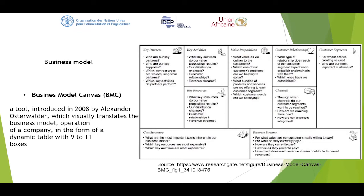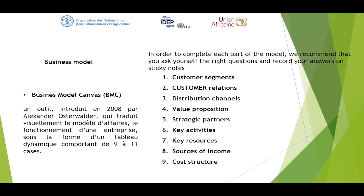Last but not least, the revenue streams. For what value are our customers really willing to pay — are they willing to pay at all? What are they paying for currently, and how are they currently paying? These are very important questions because if you're going to use digital, are they using mobile money or e-vouchers? How would they prefer to pay, and are they short of options? How much does each of these streams contribute to the overall revenue? Please go ahead and for the various innovations you've started, ask questions that are in line with the innovation at hand.